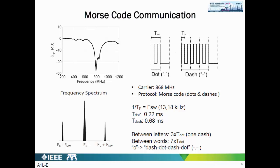Between letters we have a space of one dash duration, and between words a space of seven times the dot duration. For example, the letter C is translated to the sequence dash-dot-dash-dot. With this we can create waveforms in the microcontroller, generating subcarriers that encode our information. We will see in the next slide how we translate sensor readings into these waveforms.